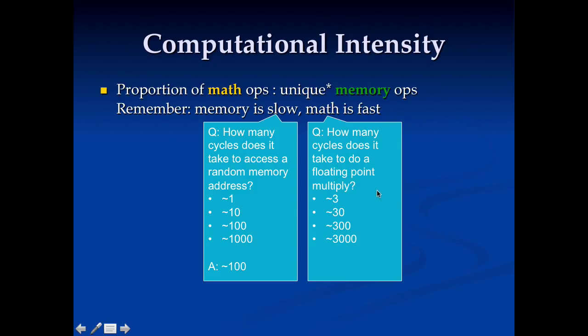Now, how fast is math? How long does it take to do a floating point multiply? Well, a floating point multiply takes about three cycles. Depending on the hardware, it may take one to three cycles if it's fully pipelined. So if you look at this, the memory here is taking 100 cycles to load data, but you can do a math operation in three cycles. That is, you can do 30 floating point multiplies in the time it takes you to load a floating point value from memory.